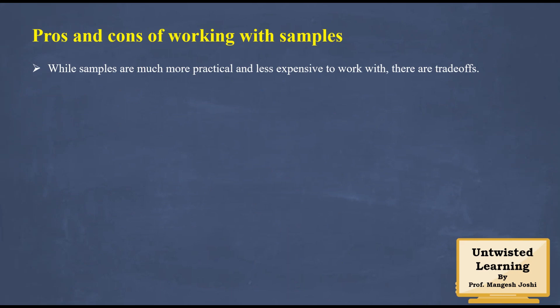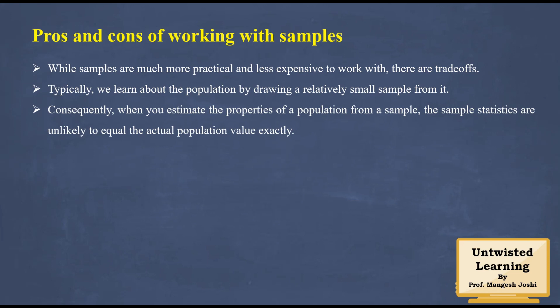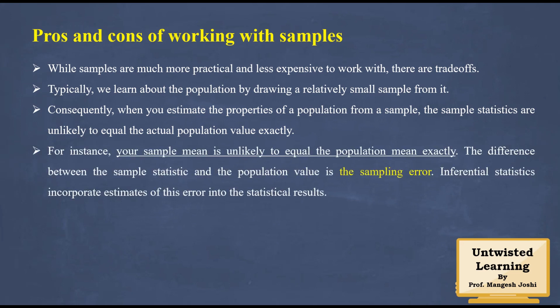The pros and cons of working with samples: while samples are much more practical and less expensive to work with, typically we learn about the population by drawing a relatively small sample. Consequently, when you estimate the properties of a population from a sample, the sample statistics are unlikely to equal the actual population value exactly. The difference between the sample statistic and the population value is called the sampling error. Inferential statistics incorporates estimates of this error into statistical results.